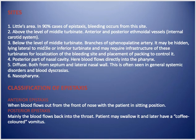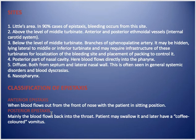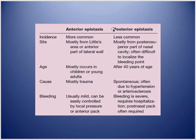Epistaxis is classified as anterior or posterior. Anterior epistaxis is when blood comes out from the nose; posterior epistaxis is when blood drips down the throat. In posterior epistaxis, blood goes into the stomach, oxidizes, changes to a brownish-black color, and the patient may vomit coffee-colored vomit. Anterior epistaxis is more common; posterior is less common. Anterior occurs from Little's area; posterior occurs from the posterior superior part of the nasal cavity.